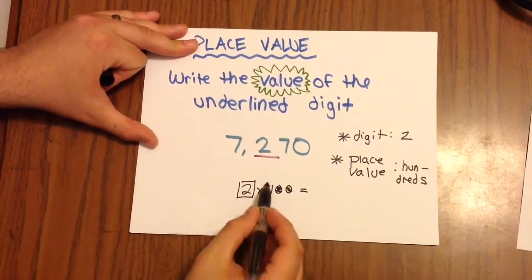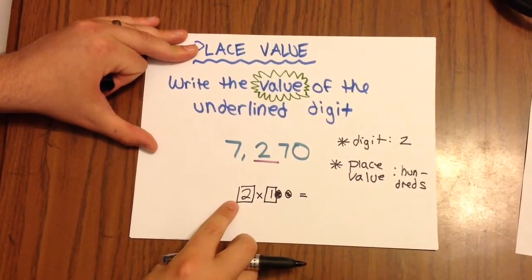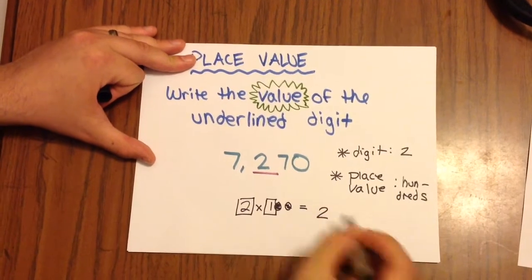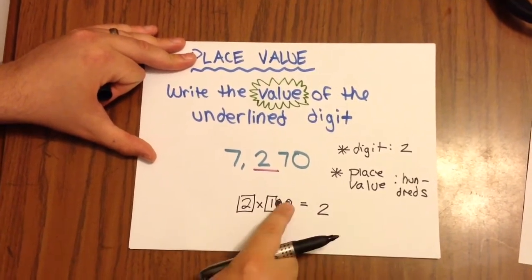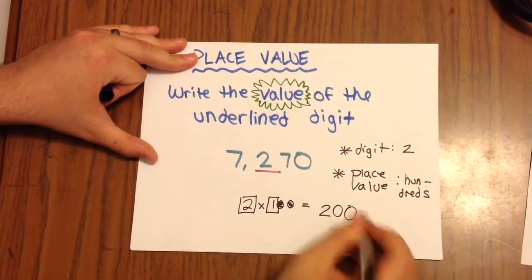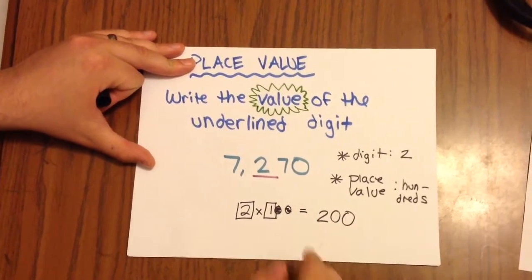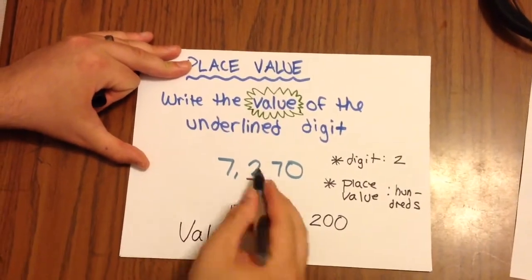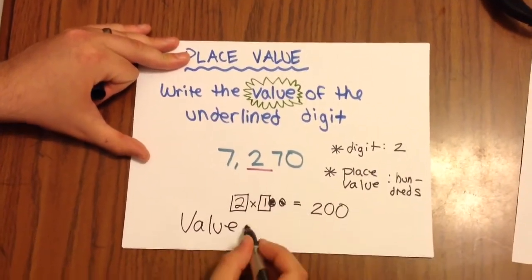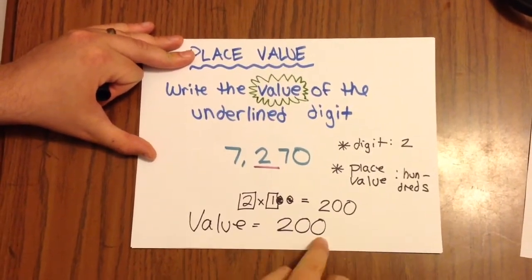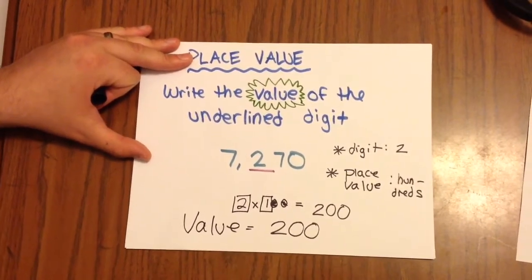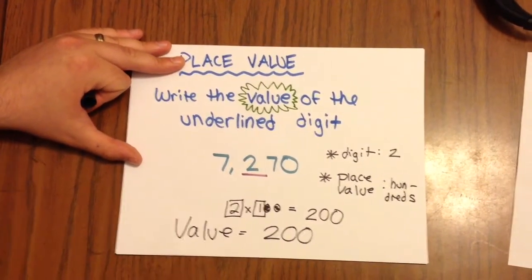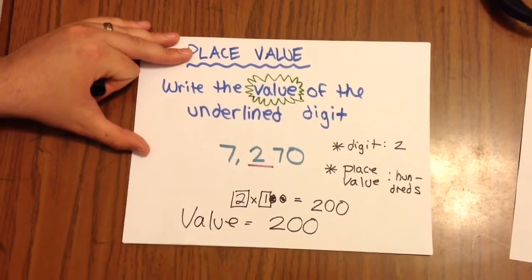So we all know and can see that the basic fact is 2 times 1. That's going to give us 2. And how many zeros did we color in? Well, we colored in 1, 2. And that's the number of zeros we need to add behind the 2 here. So our answer is 200. So the value of the underlined digit in 7,270 is 200. Remember, that makes sense. Because something could have a value of 200 bucks, right?